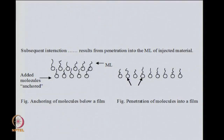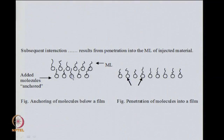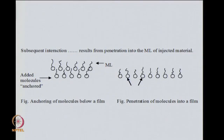This gives you a pictorial feel for what may happen. We might have, on one hand, anchoring of the injected molecules under the monolayer, with interaction between the injected molecules and monolayer molecules, but those molecules can only interact weakly with the monolayer molecules and cannot actually penetrate into the monolayer. As opposed to this, we see the penetrating molecules which make their way into the monolayer, displacing some of those monolayer molecules to find a place in the surface space.